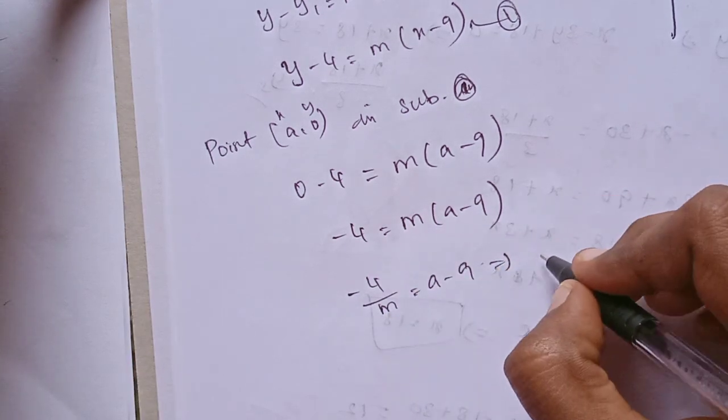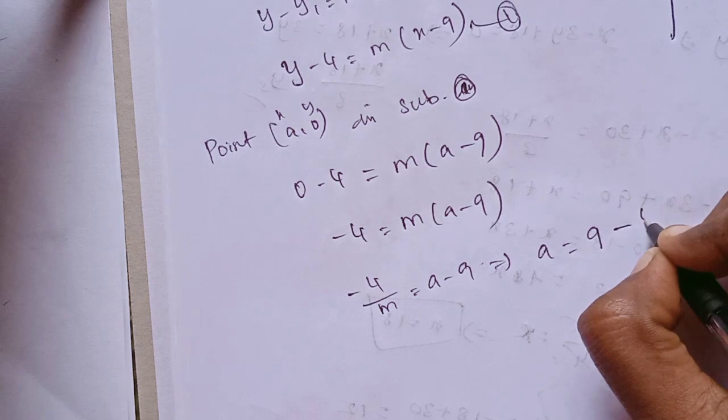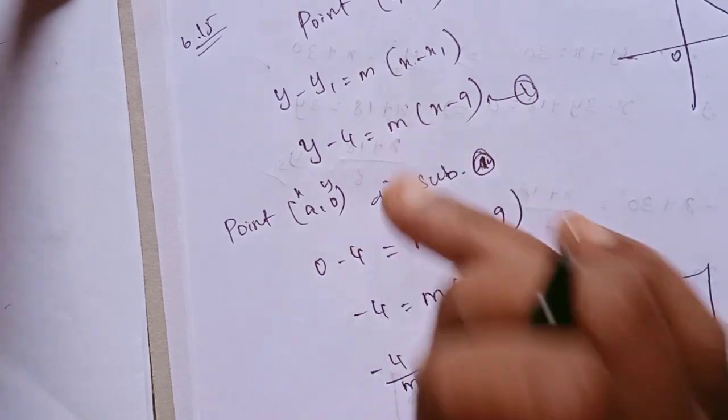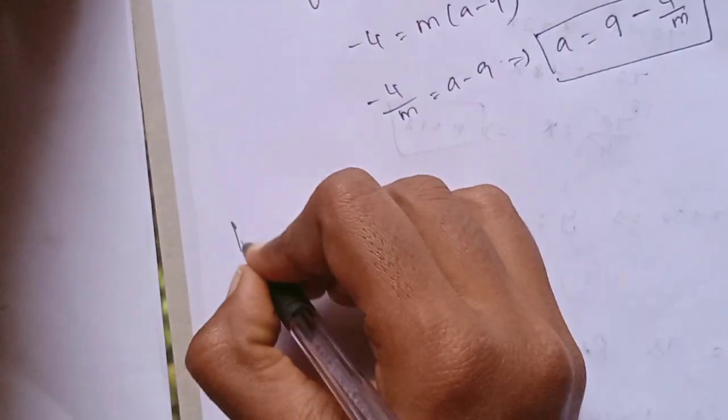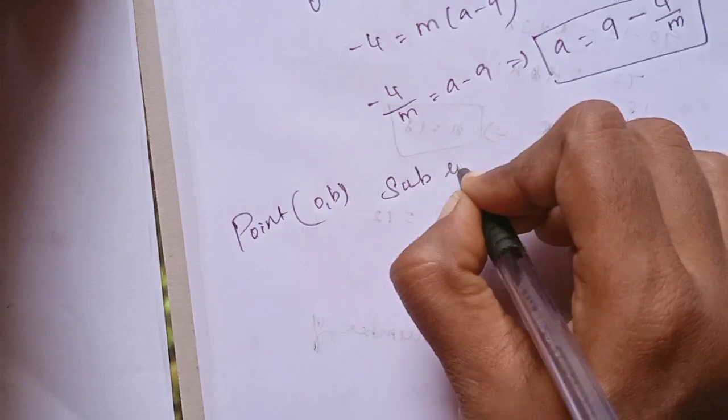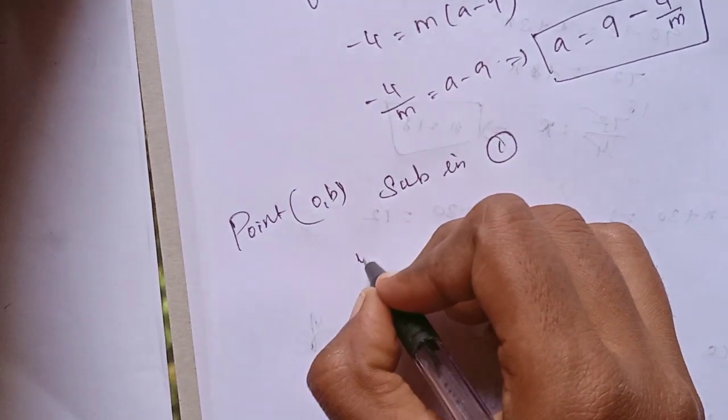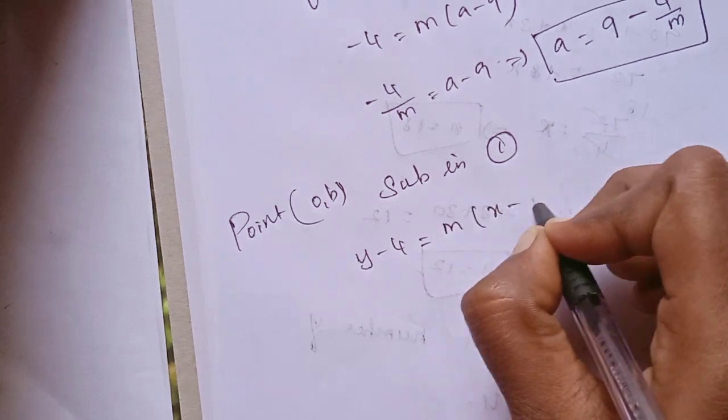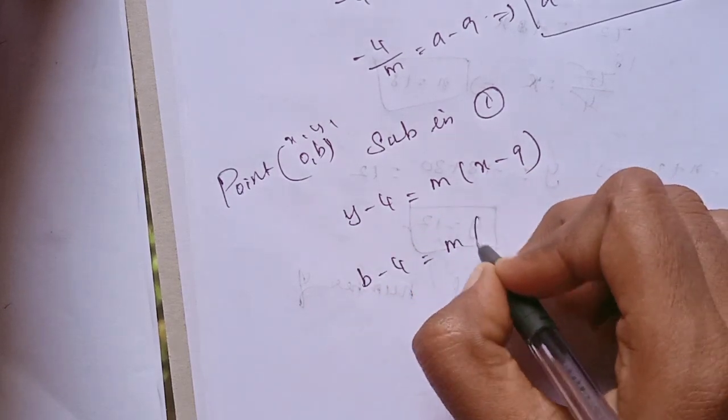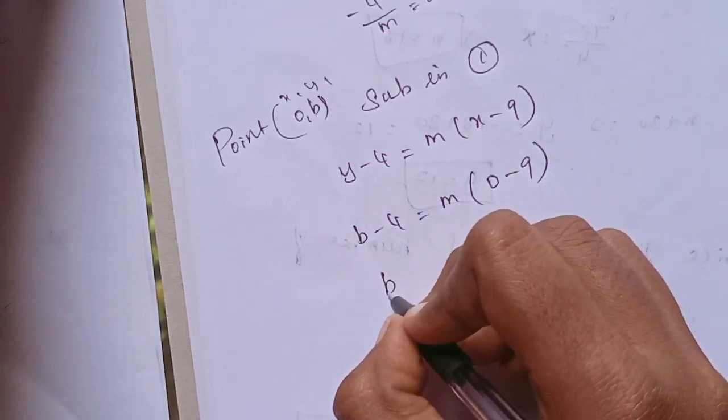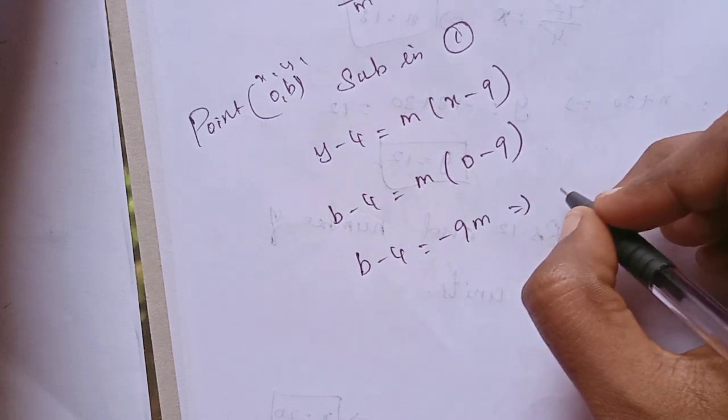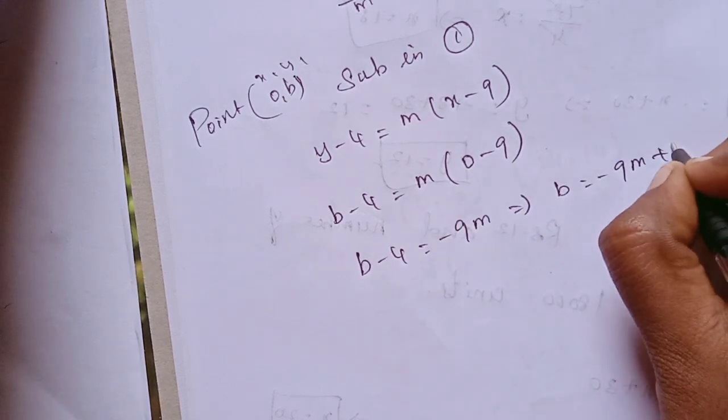Point (0,b) substitute in equation 1: y - 4 = m(x - 9). So b - 4 = m(0 - 9), which gives b - 4 = -9m. Then b = -9m + 4.